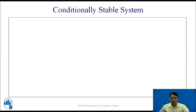In the last session, we completed types of systems, where the types of systems are Stable System, Unstable System, and Marginally — also known as Critically Stable System. Moving further to the types of system, one of the systems is also known as Conditionally Stable System.